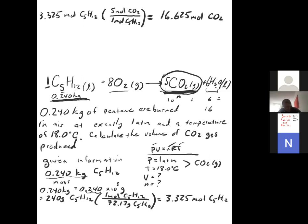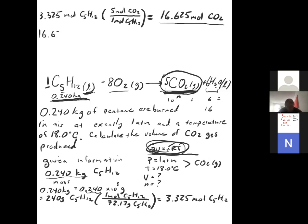Now we can use the ideal gas law. We're connecting two concepts: if you have the mass of something, divide by molar mass to get moles — you do that with liquids and solids. Then for the gas, if you want to find volume or pressure, you use the ideal gas law. So with 16.625 moles of CO2, we plug into PV = nRT, solving for V = nRT/P. They told us the pressure and temperature, so we're set. V = (16.625 mol)(0.082057 L·atm/mol·K)(273 + 18.0 = 291.15 K) / (1 atm).